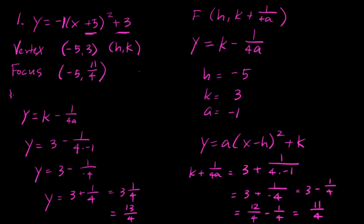So the directrix is y equals 3 and 1 fourths, or y equals 13 fourths. So the way that parabola looks is going to be a parabola that's upside down, that opens down. We're going to have the focus here, the vertex here, and that directrix up above it. All nice and hot pink. Good job, guys.